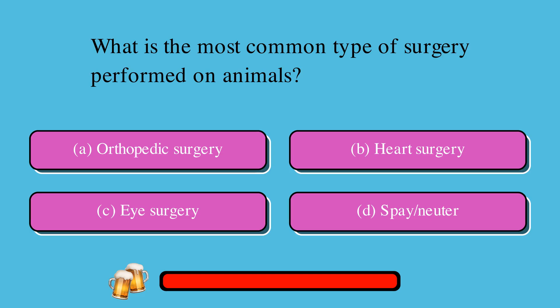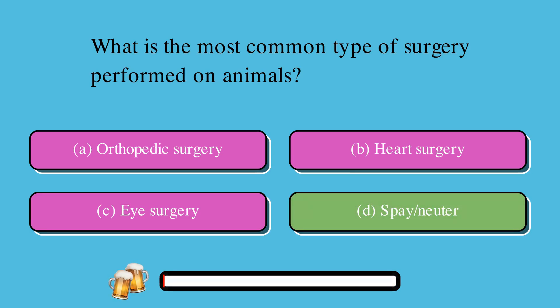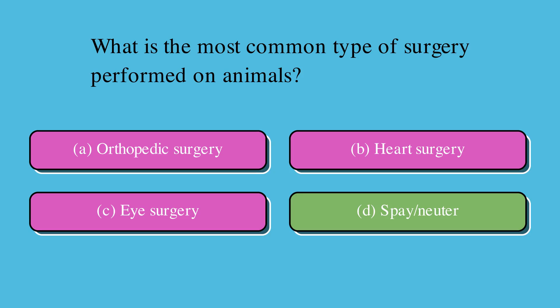What is the most common type of surgery performed on animals? A. Orthopedic surgery, B. Heart surgery, C. Eye surgery, or D. Spay-neuter. The correct answer is D. Spay-neuter.